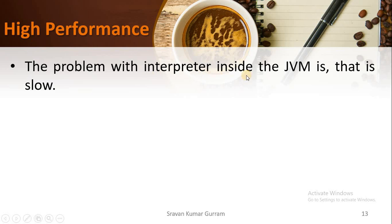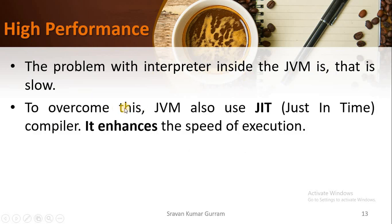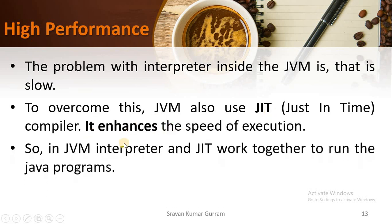High performance. The problem with the interpreter inside the JVM is that it is slow. To overcome this, the JVM also uses a compiler called JIT compiler — Just In Time compiler. The JIT enhances the speed of execution. In the JVM, the interpreter and JIT work together to run Java programs and enhance the speed of execution, which helps improve the performance of Java applications.